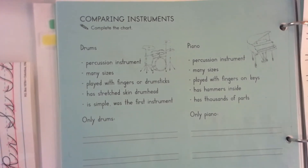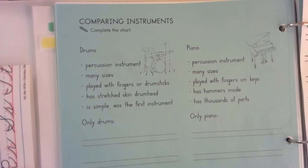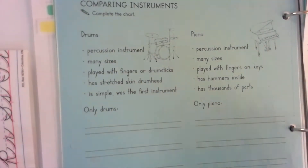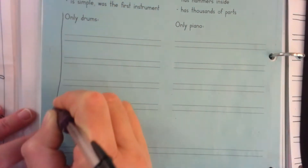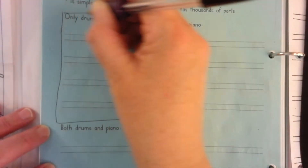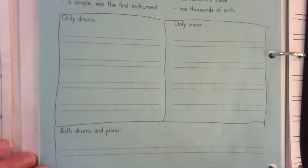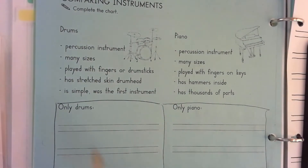Hi friends, we're going to be doing page 70, comparing instruments — page 70 of Building Opinion Writing, comparing instruments. The directions say to complete the chart. So if you look down here, there is actually a chart, and I'm just going to outline it so you can see. When they say a chart, this is what they mean. It says: only drums, only piano, and both drums and piano.